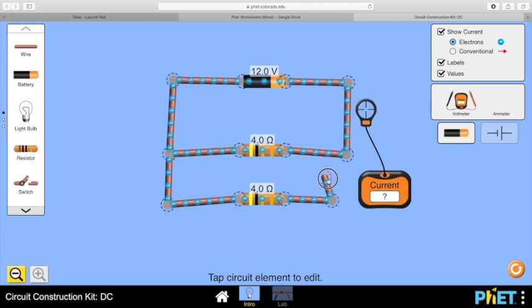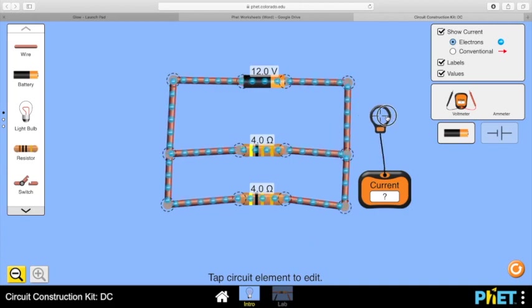Well, here's the two resistors. Here's the current. It's 6 amps. By adding an identical resistor in parallel, the current has doubled.